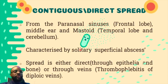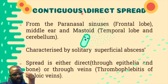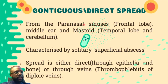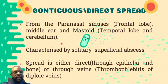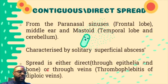Regarding contiguous spread from paranasal sinuses — maxillary, frontal, and ethmoidal — abscesses tend to appear in the frontal lobe. Middle ear and mastoid infections produce abscesses in the temporal lobe and cerebellum. These are characteristically solitary and superficially located. Spread occurs via two routes: directly, where virulent bacteria brute-force through epithelium and bone, or through the veins via thrombophlebitis of the diploic veins — all veins of the head and neck are valveless, allowing bi-directional flow.